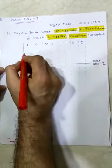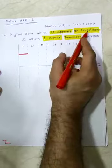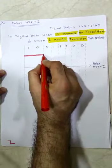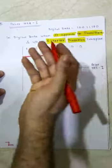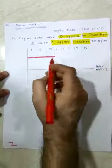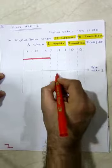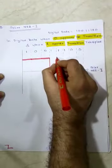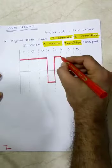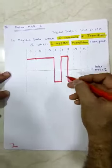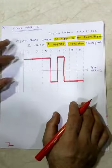Starting with one — the line begins above the reference line and a transition occurs. Zero appears — no transition, line continues as is. Again zero — line continues. One appears — transition occurs, line moves below the reference line. Again one — transition, line goes above. Again one — transition, line goes below. Zero — no change. Zero — no change. This is how we draw the polar NRZ-I waveform.